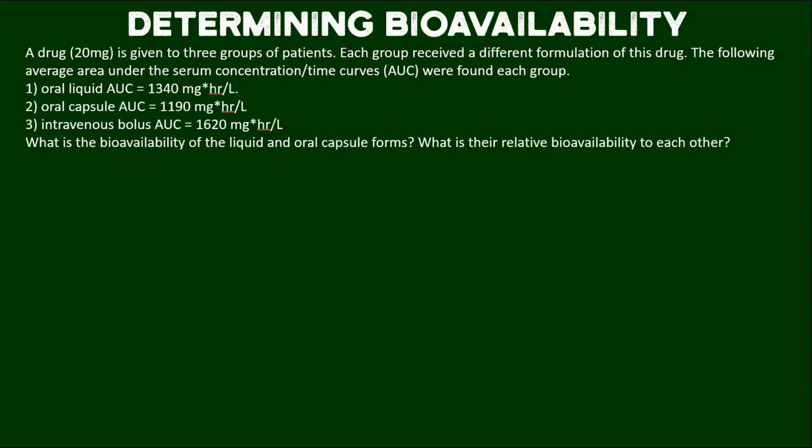In the first group they received the oral liquid version and their AUC was 1340 milligram hour per liter. The second group received the oral capsule and their AUC was 1190 milligram hour per liter. The final group received an intravenous bolus dose and their AUC was 1620 milligram hour per liter. So what is the bioavailability of the liquid and oral capsule forms?